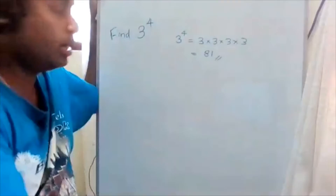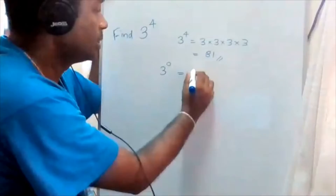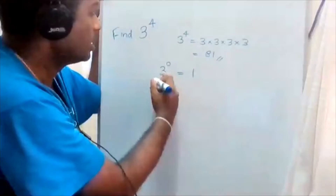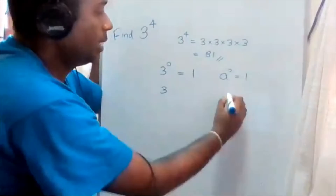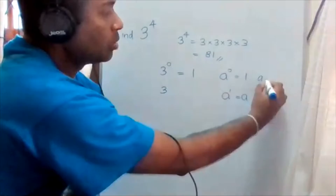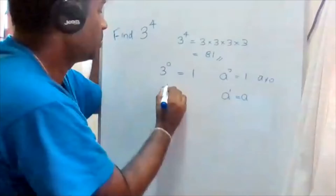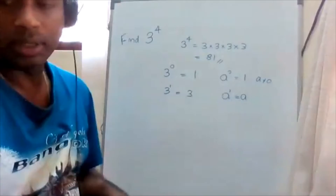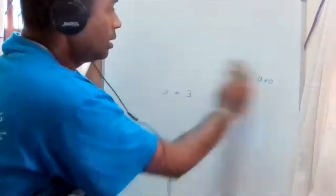Also remember: any number to the power of zero is one. So three to the power zero is one. Any number to the power of one is the number itself — but here the base 'a' should not be equal to zero. For example, three to the power one is three. These are very important rules when dealing with indices.